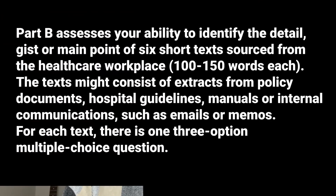So let's talk about OET Part B. This is what OET themselves say: Part B assesses your ability to identify the gist or main point of six short texts sourced from the healthcare workplace, around 100 to 150 words each. The texts might consist of extracts from policy documents, hospital guidelines, manuals, or internal communications such as emails or memos. For each text there's one three-option multiple choice question. It's recommended that you spend 12 minutes on Part B, which works out to just two minutes per question.